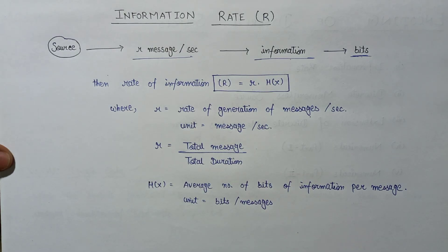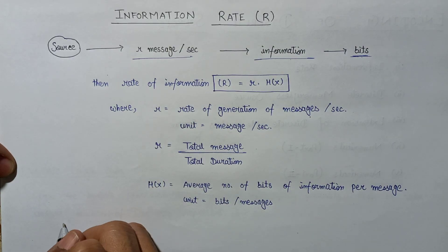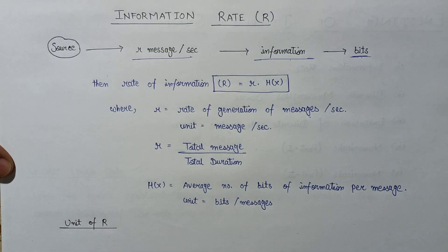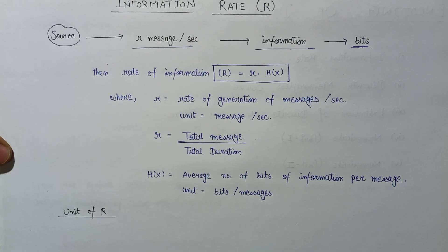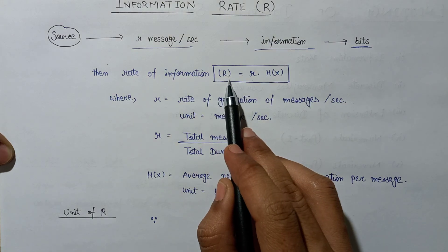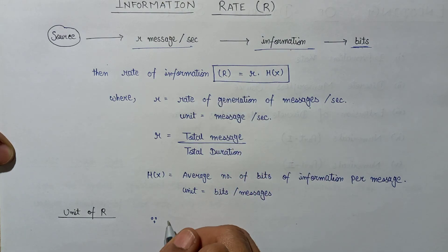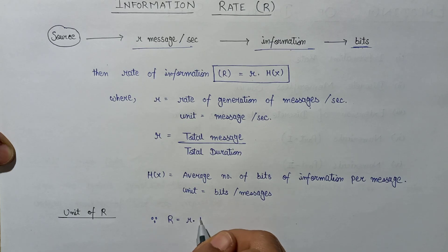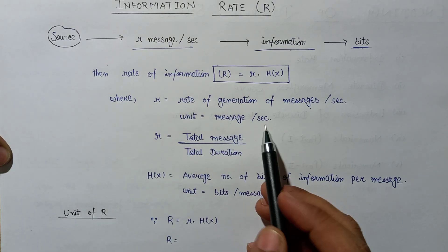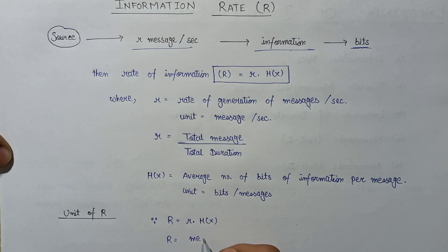Now let us look at the unit of capital R, the rate of information. We can easily calculate the unit of any quantity from its formula. Since R equals small r multiplied by H(x), the unit of small r is messages per second.